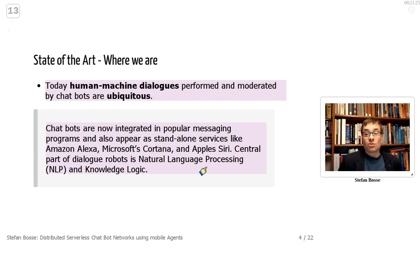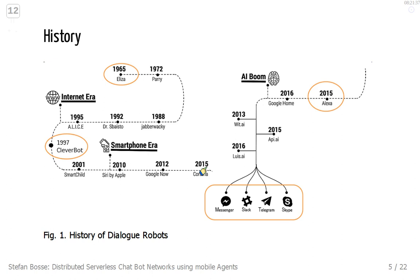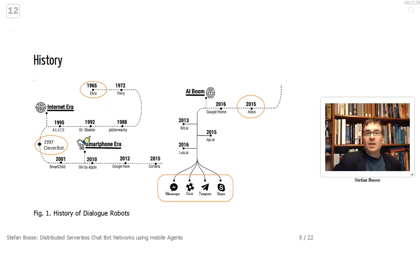Here is a short overview of the history of chatbots or dialogue robots, starting with ELIZA in the 1960s. Then Cleverbot, showing how it fits a more conversational dialogue robot. Around 2010 the smartphone era brought Siri by Apple, Alexa, and so on. Finally, dialogue robots were injected into commonly used social media and messenger services like Telegram, Skype, and so on.